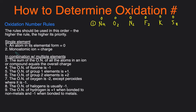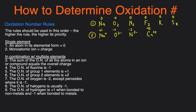Rule number two: the oxidation number of a monoatomic ion equals its charge. So if you have a single element with a charge, its oxidation number equals that charge. For example, Na⁺ has an oxidation number of +1. O²⁻ is −2. N³⁻ is −3. Ca²⁺ is +2. If you have a single element with a charge, its oxidation number equals the charge.